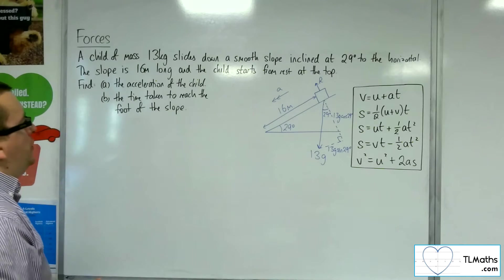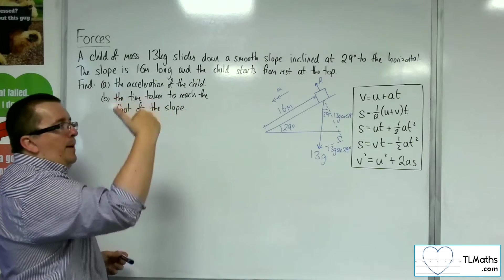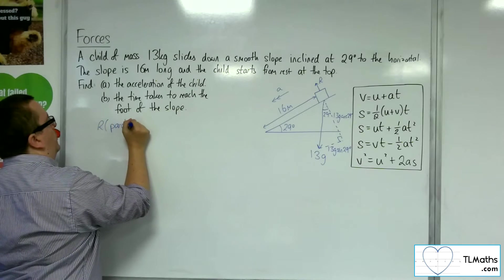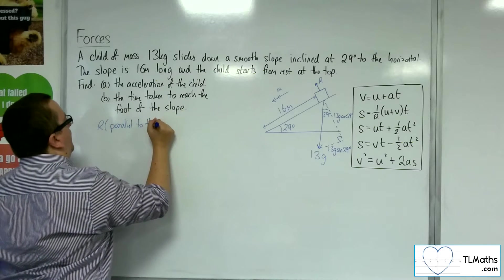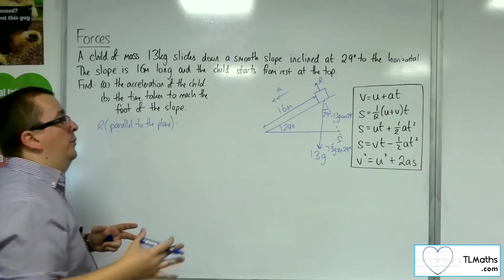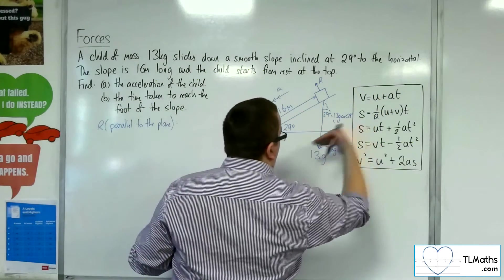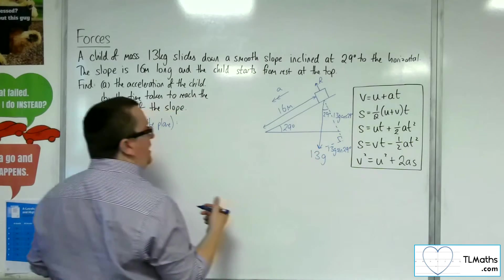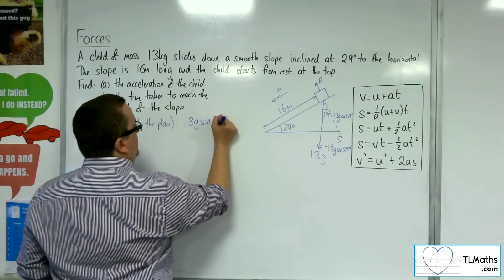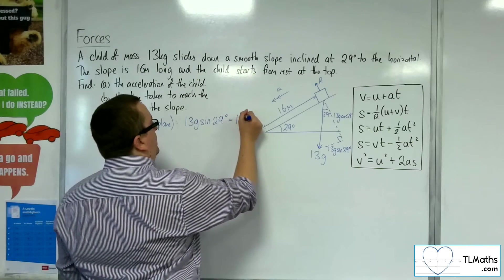So first of all, to find the acceleration of the child, I'm going to look at resolving parallel to the plane. So using F equals ma, the net force, the only force working on it will be the weight. And that's the component that is parallel to the plane, the 13g sine 29. So 13g sine 29, and that's going to be equal to the mass times acceleration, so 13a.